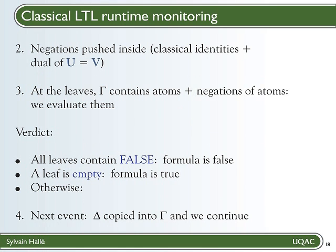Ultimately, if all leaves contain one formula that evaluated to false, then the original LTL formula itself is false. If one of the leaves is empty — that is, it contains nothing on the right-hand side — and its left-hand side evaluates to true, then we conclude that the original LTL formula itself is true. Otherwise, we can't conclude. We take all the leaves that don't contain false, move their right-hand side to the left, and wait for the next message.